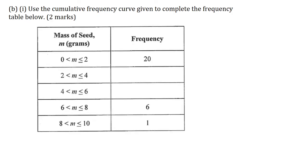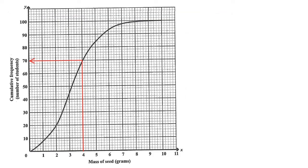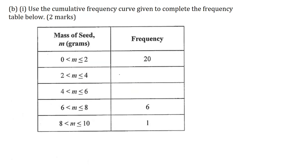Part B1: use the cumulative frequency curve to complete the frequency table below for 2 marks. I will use the cumulative frequency curve to determine the number of students that estimated a mass of no more than 4 grams. I locate 4 grams on the x-axis, draw a straight line up to the cumulative frequency curve, then straight over to the y-axis, getting a cumulative frequency of 70 students. This gives 70 minus the previous cumulative frequency of 20, giving 50 students for this class interval.